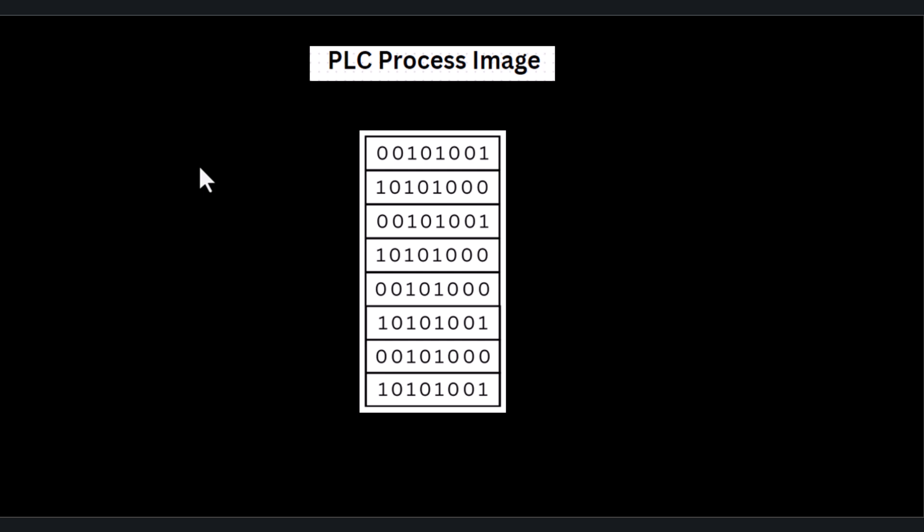In the context of programmable logic controllers, process image refers to the representation of PLC input signals data, output data, and internal data. It is essentially a snapshot of the PLC's input, output, and internal data.